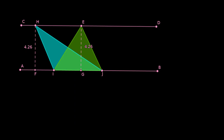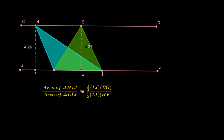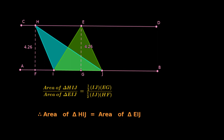Let us drop the altitude to the base from each vertex — this is the distance between the two parallel lines. The ratio of area of triangle HIJ to area of triangle EIJ equals (½ × IJ × EG) ÷ (½ × IJ × HF). Since IJ is the same base and EG equals HF (the distance between the parallel lines), the ratio equals 1. Therefore area of triangle HIJ equals area of triangle EIJ.